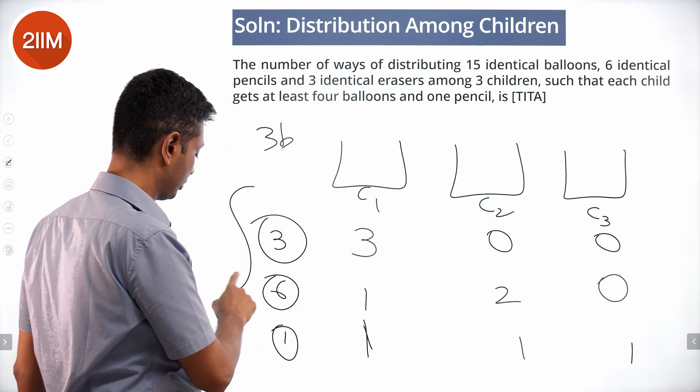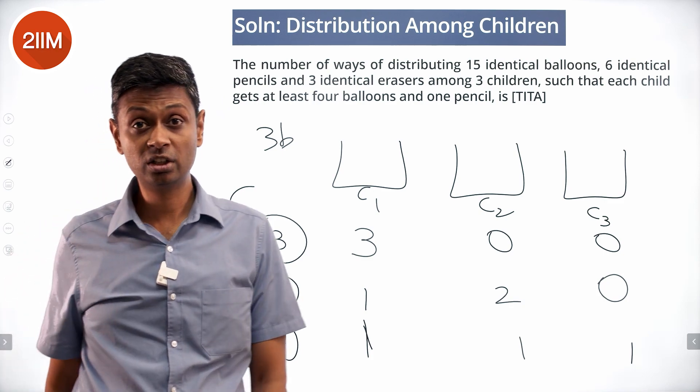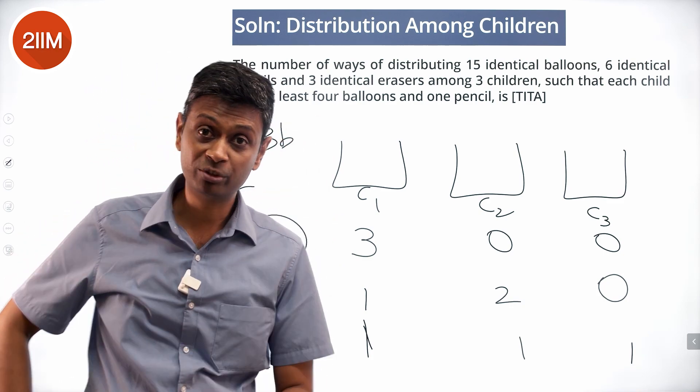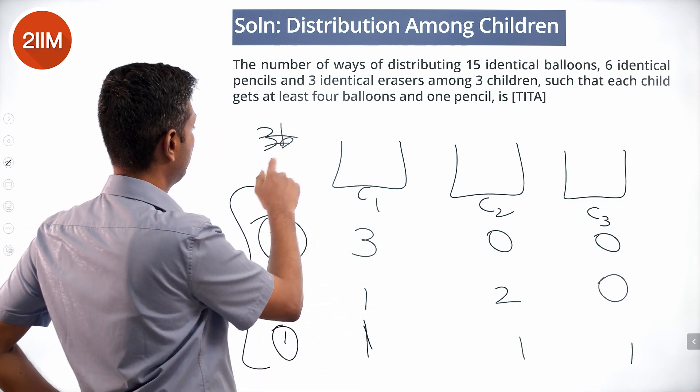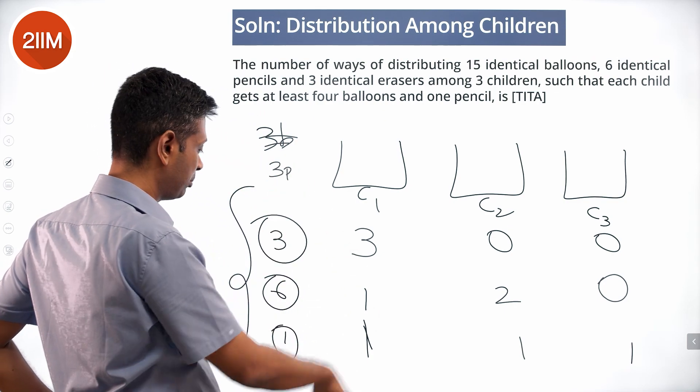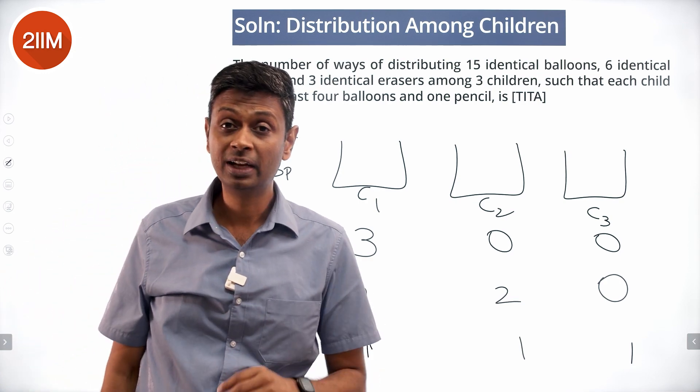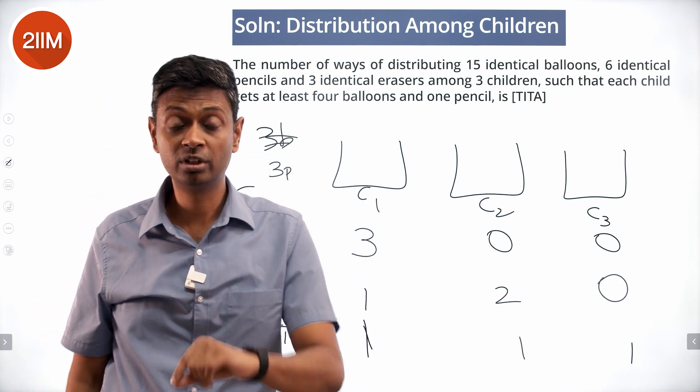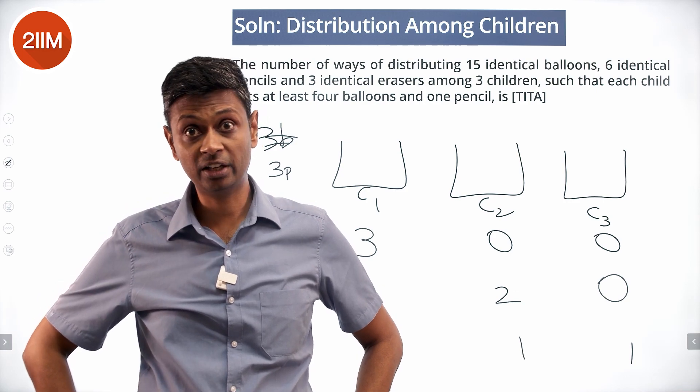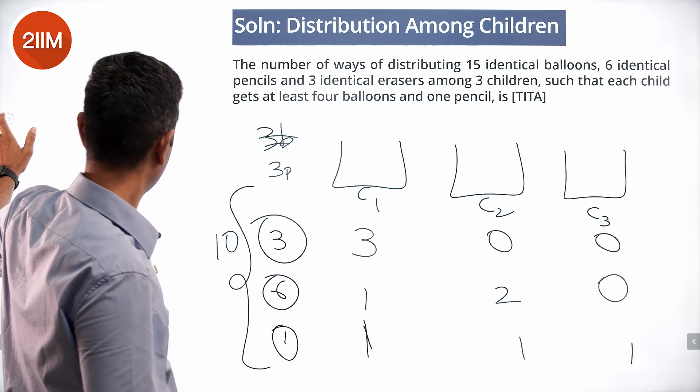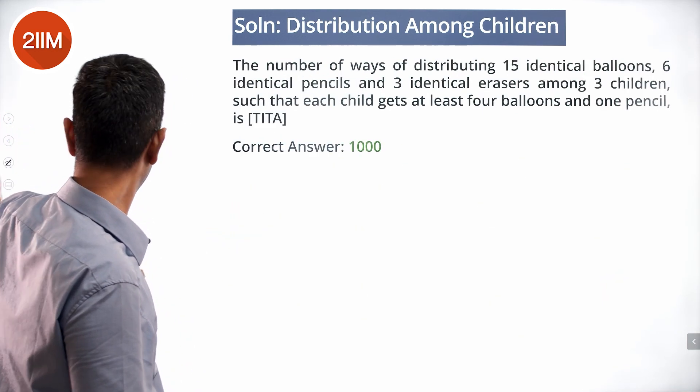That can be done in 10 ways. We still haven't touched our erasers and our pencils. But here that becomes simpler because we put 3 pencils, that can be done in the same 10 ways. 3 erasers, same 10 ways. 10 ways of distributing balloons, 10 ways of distributing pencils, 10 ways of distributing erasers, 10 into 10 into 10, 1000 totally. That's the answer we're looking for. Excellent, excellent, excellent question.